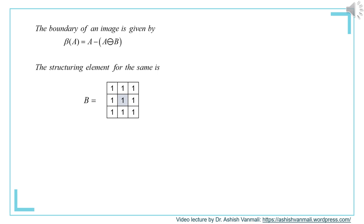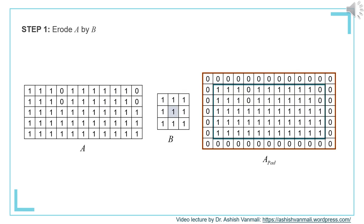Step 1 is to erode A with structuring element B, following the same steps as shown in videos 1 and 2. We take image A and first pad it with 0s. Since the structuring element B is 3×3 with 1 row above and below the center and 1 column on the left and right, we pad 1 row above and below A and 1 column on each side with value 0.